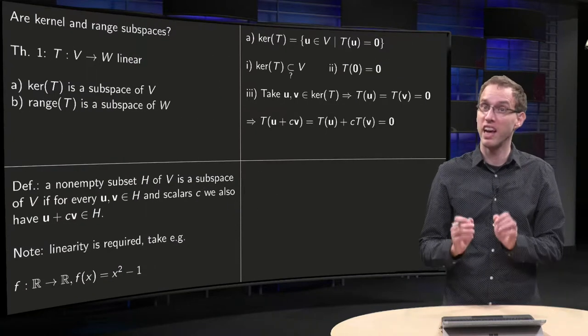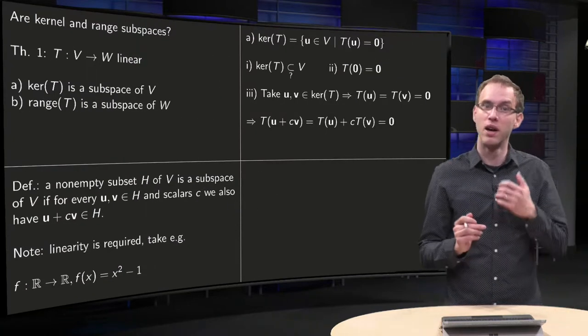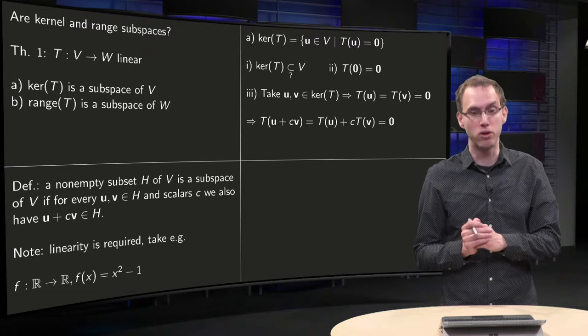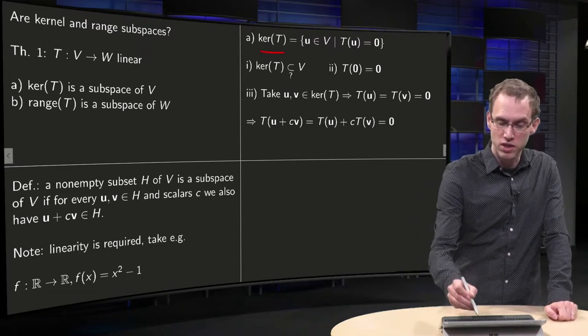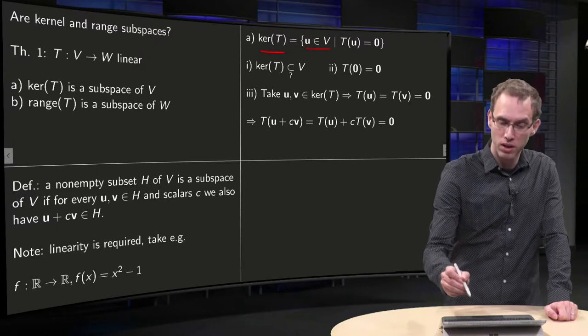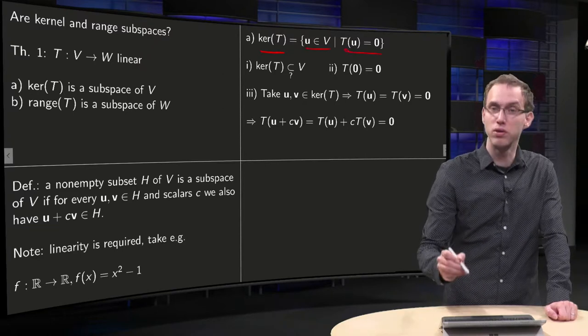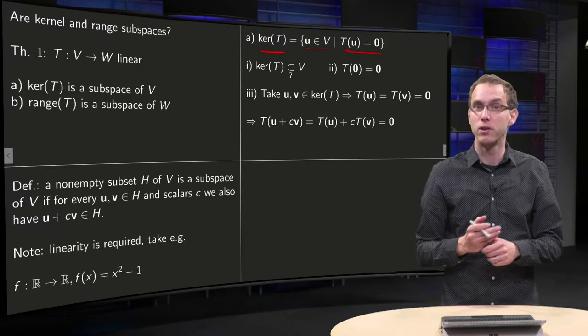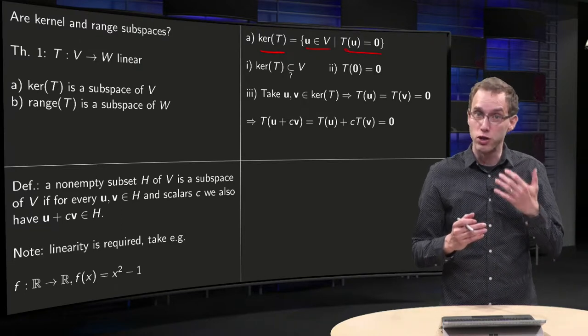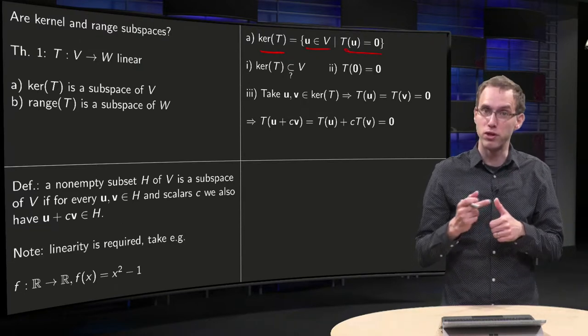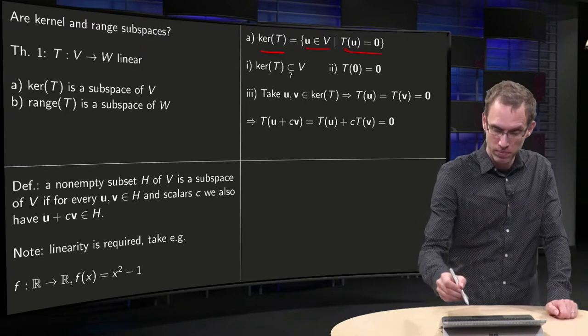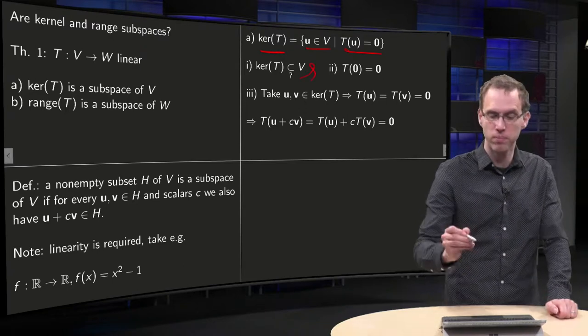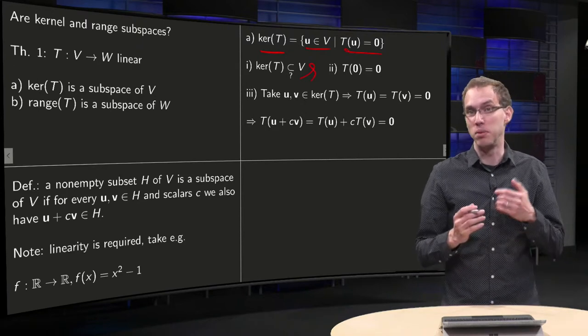But why is it true if your transformation is linear? Let's look at the kernel first. Kernel of T is the set of all U in the domain V such that T of U equals 0. We have a subspace if first of all the kernel has to be a subset of V. That's true by definition. Then it has to be non-empty.